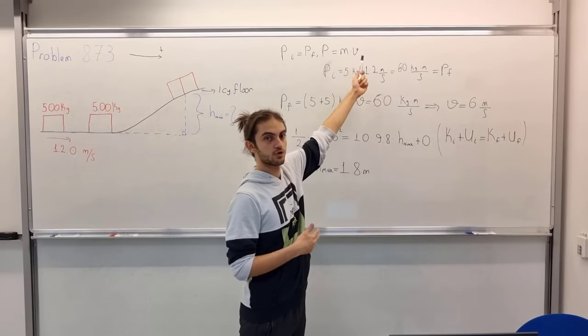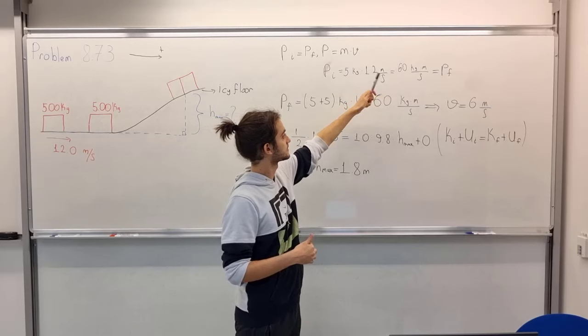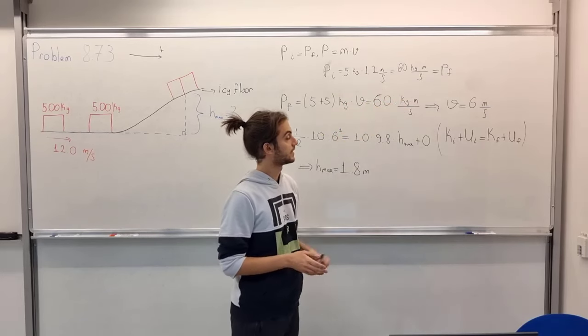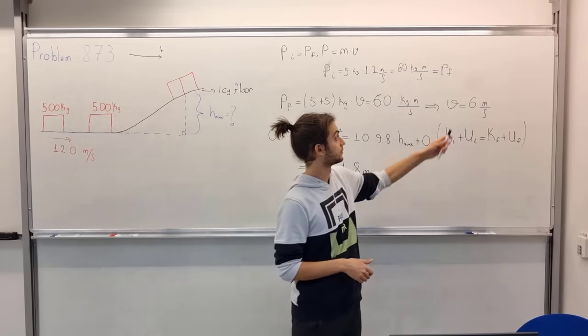P initial equals, as you know, the formula of momentum. We have 5 kilograms times 12 meters per second, then we have 60 kilogram meters per second, and that has to be equal to P final.